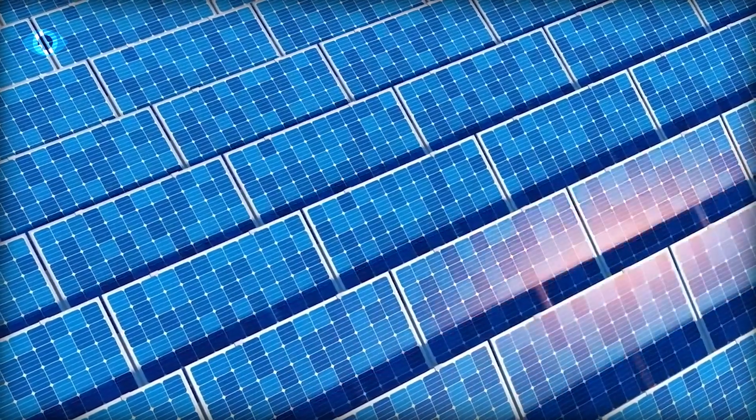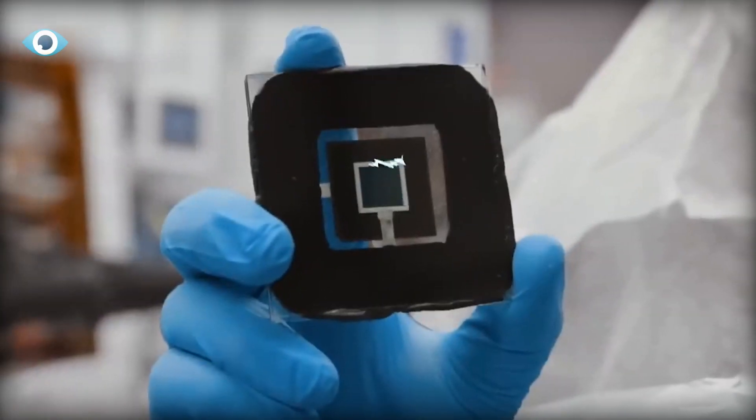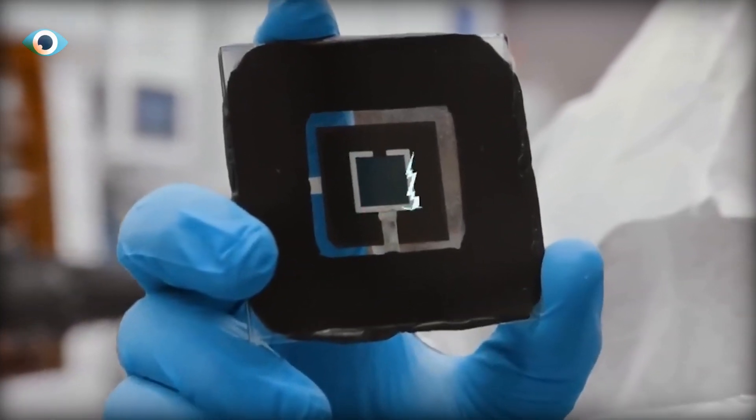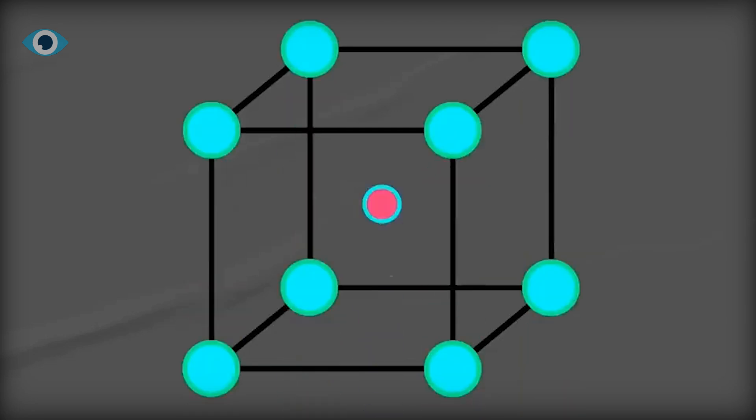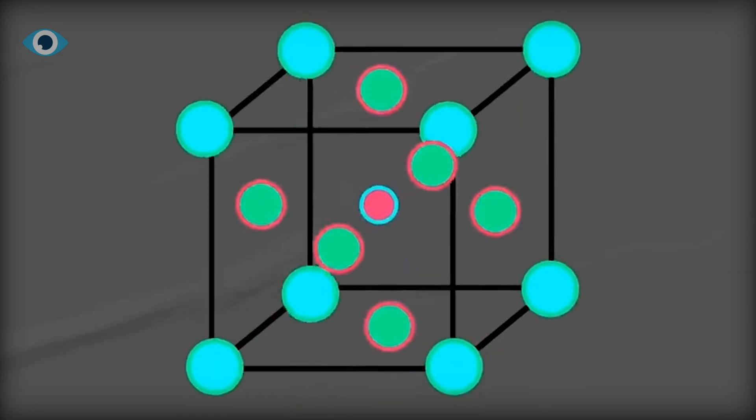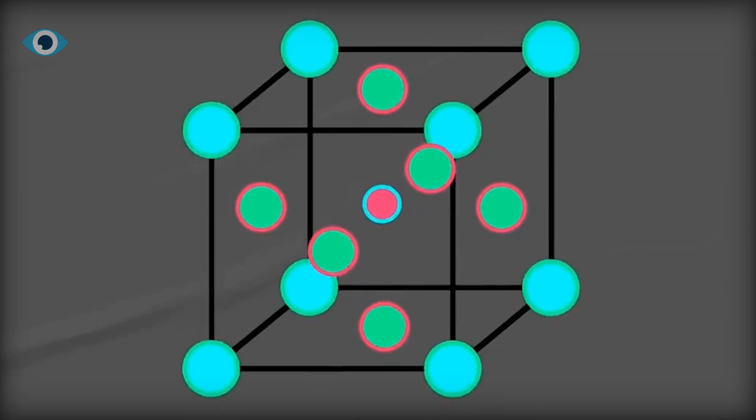However, perovskite offers a beacon of hope. This new material presents a transformative solution to these inefficiencies. The perovskite crystal structure has the ABX3 formula. Each element or molecule within this structure plays a crucial role in its composition and function.